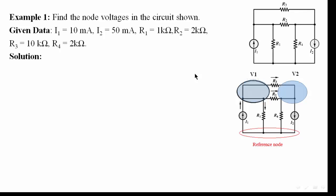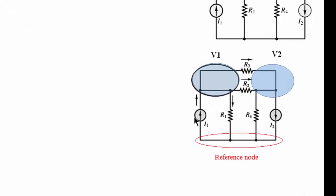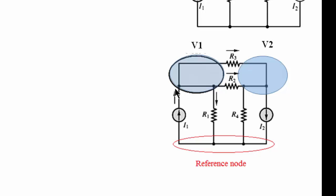Kirchhoff's current law, or KCL, states that the sum of currents entering a node equals the sum of the currents leaving the node. In other words, the resultant of the currents entering the node minus the currents leaving the node is equal to zero. So, we can determine the direction of the currents — whether they are entering or leaving the node — from the sources available. We can see that this current is entering node V1, while these other currents are leaving the node.